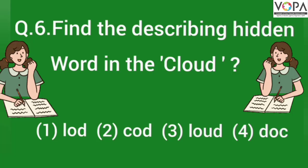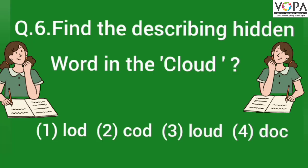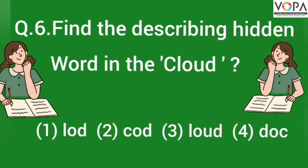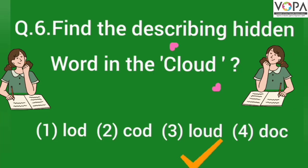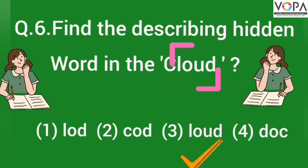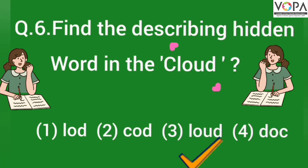आपल्याला पुढील चार पर्यायांमधून उत्तर निवडायचे आहे. पहिला पर्याय 'loud' — हा नाही. दुसरा 'code' — हा पण नाही. तिसरा 'loud' हा पर्याय बरोबर आहे. म्हणजे आपला तीन नंबरचा पर्याय हे उत्तर बरोबर आहे.